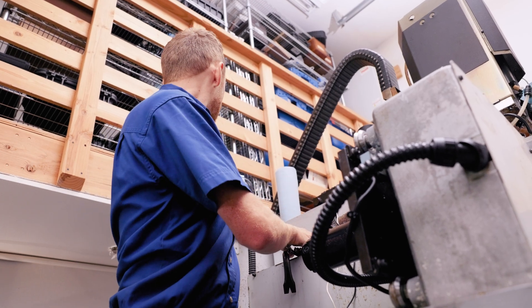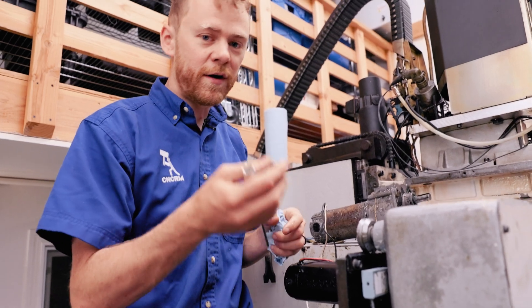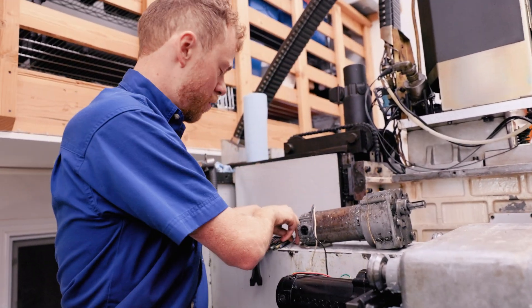So Allen wrenches, a crowbar, a 3/16ths stubby or socket that you can put on a ratchet, driver that you can put on a ratchet. Let's get going. We'll get right to it.